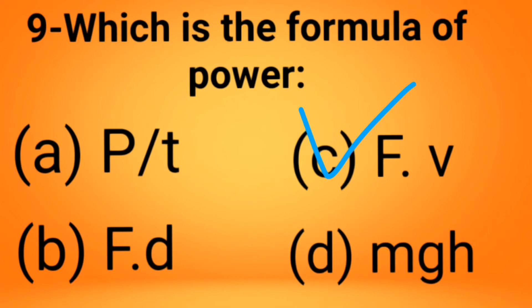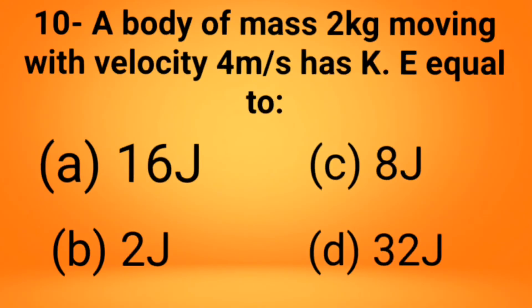As when we prove the formula of power with W over t, we get F · v. Now let's move toward the last MCQ. A body of mass 2 kg moving with velocity 4 meter per second has kinetic energy equal to 16 joule, 18 joule, 8 joule, 2 joule, or 32 joule? We have to find the kinetic energy by applying the formula.